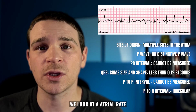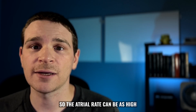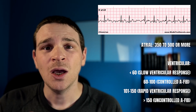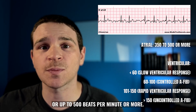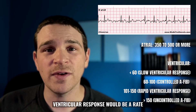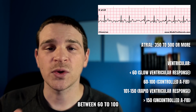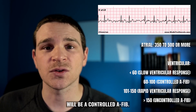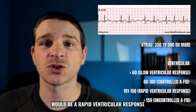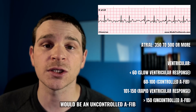With atrial fibrillation, we look at both atrial rate and ventricular rate. The atrial rate can be as high as 350 to 500 beats per minute or more. A slow ventricular response is a rate less than 60; between 60 to 100 is controlled A-fib; 100 to 150 is a rapid ventricular response; and anything above 150 is an uncontrolled A-fib.